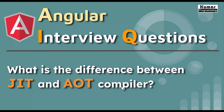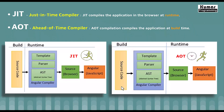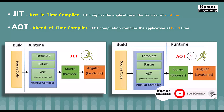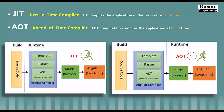In Angular we have basically two types of compiler: JIT and AOT. JIT stands for Just-In-Time compiler and AOT stands for Ahead-Of-Time compiler. In Just-In-Time compiler, it compiles the application in the browser at runtime. In AOT compiler, it compiles the application at the build time itself.